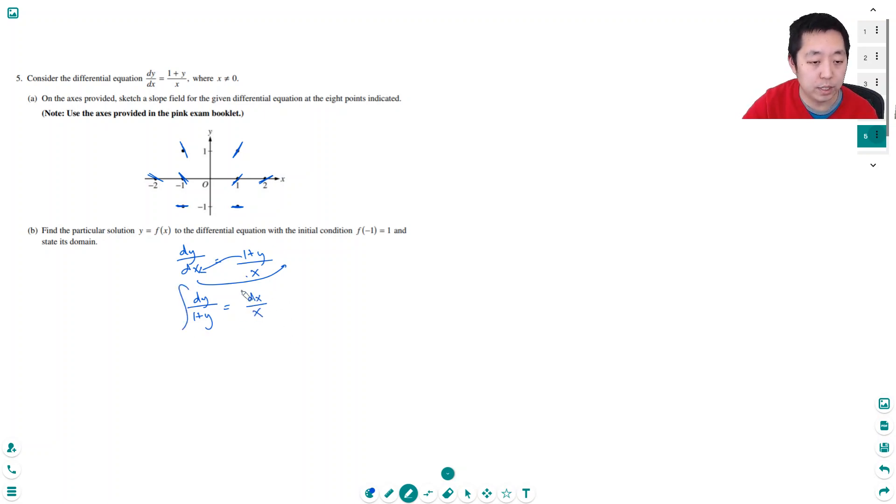Alright, then I'm going to integrate both sides. This is natural log absolute value of (1+y). This is natural log absolute value of x plus c.